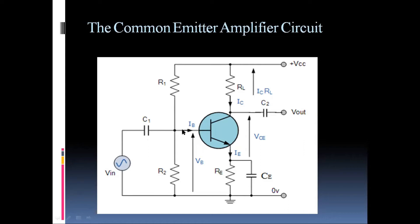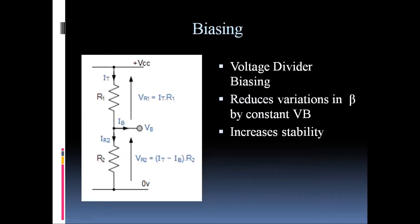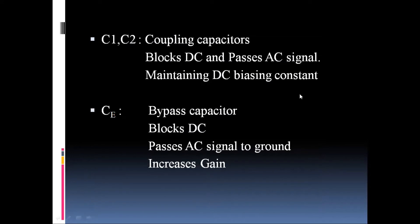The advantage of blocking DC is that the biasing levels are fixed. Because of fixed biasing, we get fixed current and fixed voltages available for the transistor, and this condition should remain fixed with no variations. The coupling capacitors block DC levels, so any DC signal from different sources does not affect the biasing conditions of the transistor, maintaining the stability of the circuit.